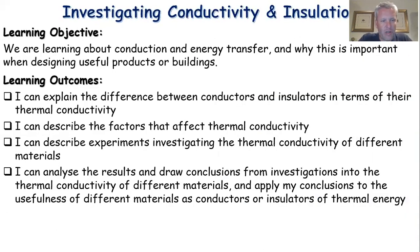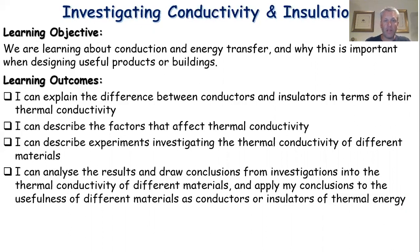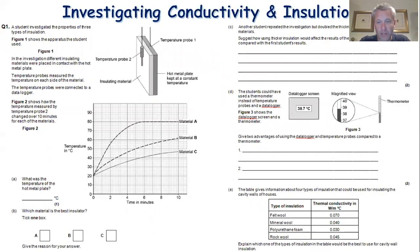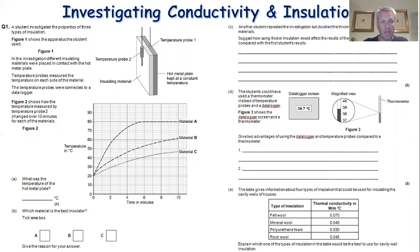Let's review our learning outcomes. We've looked at two experiments, discussed variables and fair testing, examined data, and drawn simple and detailed conclusions about the rate of thermal energy transfer. To finish, download the two questions about experiments involving thermal energy transfer. Write your answers by hand or type directly onto the document, then submit to your teacher on Google Classroom. Good luck, see you next time.